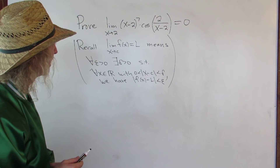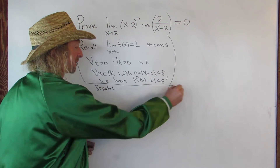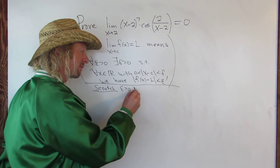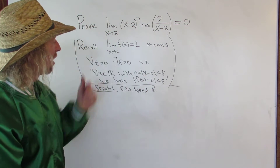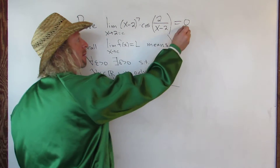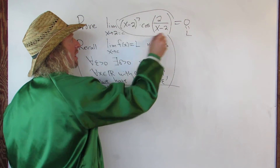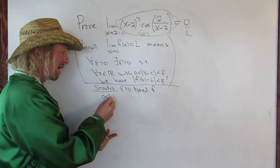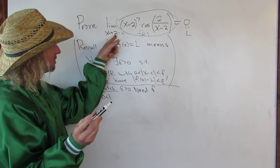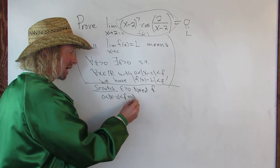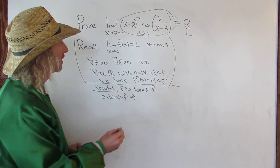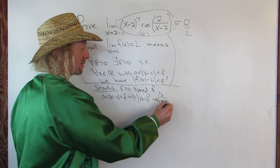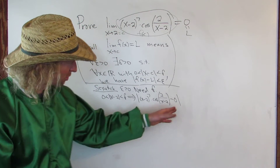Let's go ahead and prove that this limit is 0. First we need to figure out our delta, so we need to do some scratch work. We'll have an epsilon greater than 0 — that's given in our proof, we just need to find delta. Our c here is going to be 2, our L here is 0, and this expression is our f of x. So we'll write: absolute value of x minus 2 less than delta, and that has to imply that the absolute value of f of x minus L — so x minus 2 to the 7th times cosine of 2 over x minus 2, minus 0 — is less than epsilon. That's the goal.